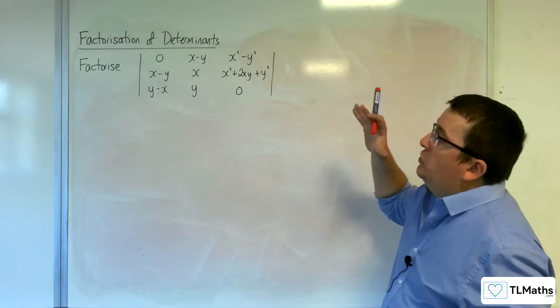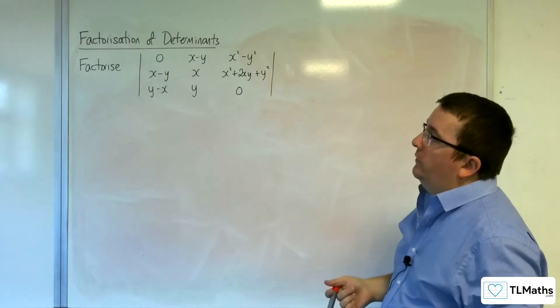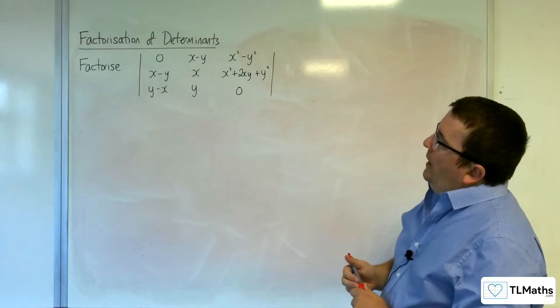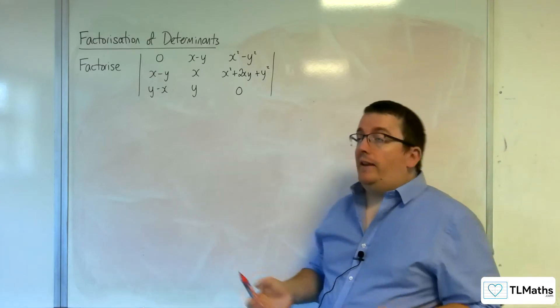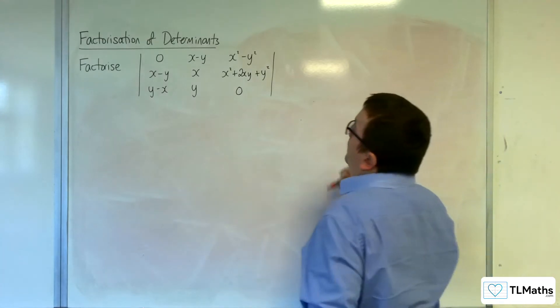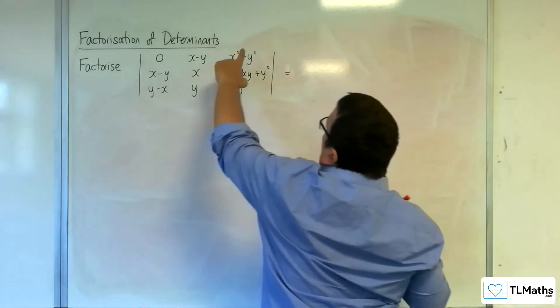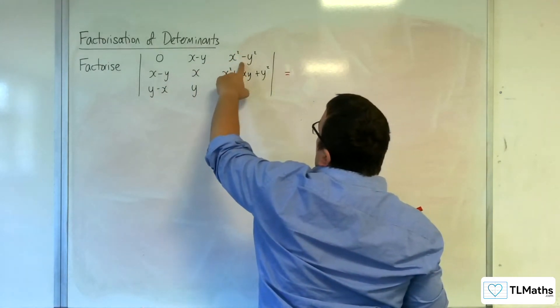In this video, we're going to look at factorising the determinant of this matrix. So, first things to look out for: difference of two squares, any factorising that can be done. So hopefully you're spotting difference of two squares here, so that can be factorised.